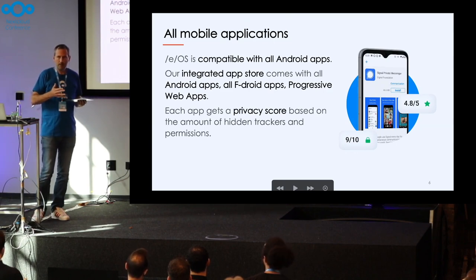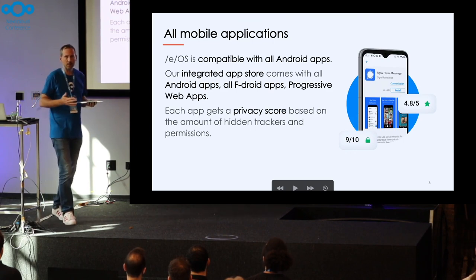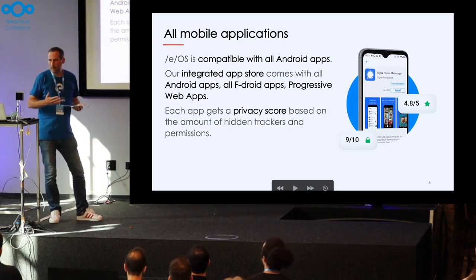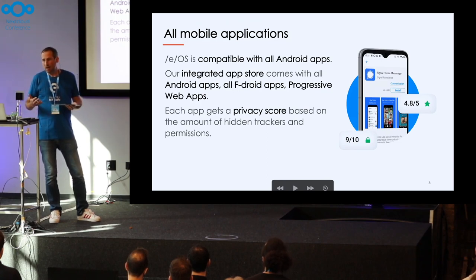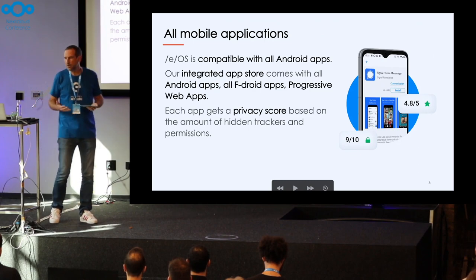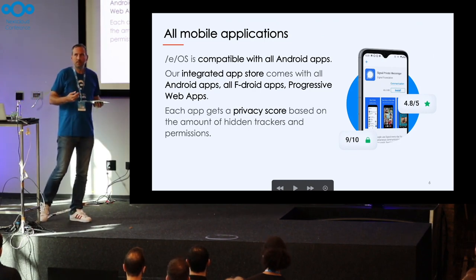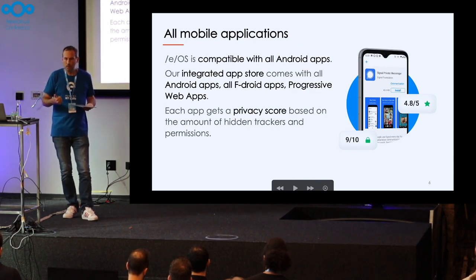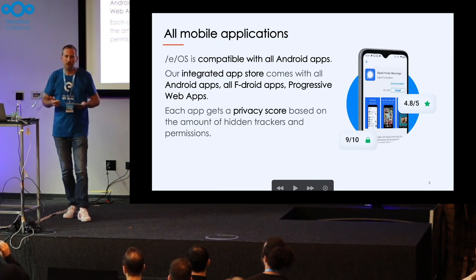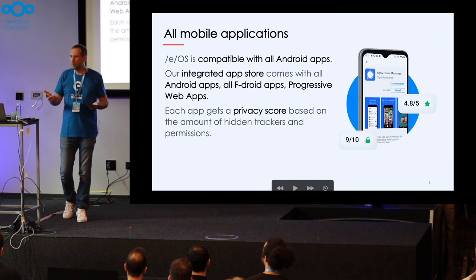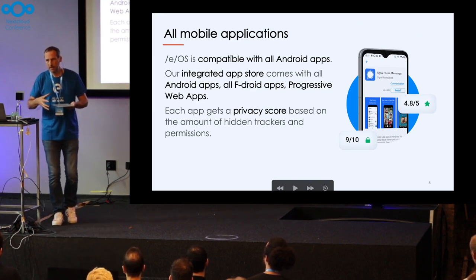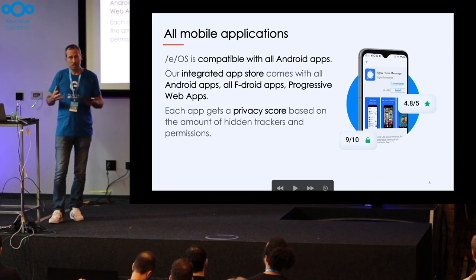We started with AOSP Android because we wanted to stay compatible with all Android mobile applications. So on eOS, you can run any Android application, and you can browse those applications using an application we call App Lounge, which gets applications from different sources. One is from Google Play Store with an anonymous mode. The other is from F-Droid, where you can find a lot of open-source applications. And the third one is from progressive web apps. All the streams come into a single place with a consistent user experience for our users.